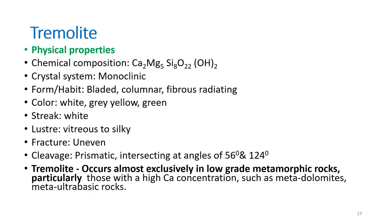Coming to tremolite. Its chemical composition is hydrated calcium magnesium silicate, belonging to the monoclinic crystal system. Its form or habit is bladed, columnar, and sometimes fibrous radiating. Color is white, gray, yellow, or green. Streak is white, luster is vitreous to silky, and fracture is uneven. Cleavage is prismatic, intersecting at angles of 56 and 124 degrees. Tremolite generally occurs exclusively in low-grade metamorphic rocks, particularly those with high calcium concentrations such as metadolomites and meta-ultrabasic rocks.